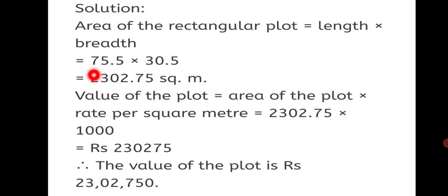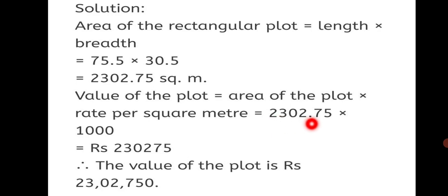This is the area of the rectangular plot. The value of the plot equals area of the plot into rate per square meter. The rate per square meter is 1000. So value equals 2,302.75 into 1000, which gives rupees 23,02,750.